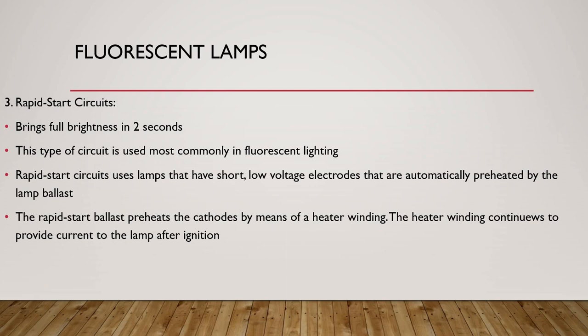The third method is rapid start circuits, which bring full brightness in two seconds. This type of circuit is used commonly in fluorescent lighting. Rapid start circuits use lamps that have short, low voltage electrodes that are automatically preheated by the lamp ballast. The rapid start ballast preheats the cathode by means of a heater winding. The heater winding continues to provide current to the lamp after ignition.